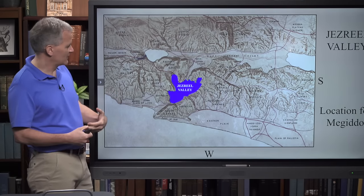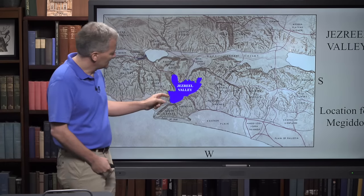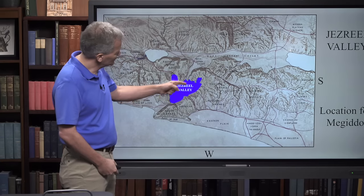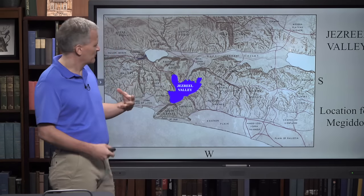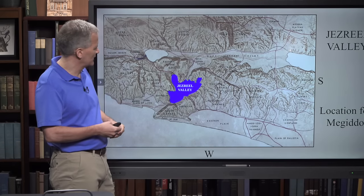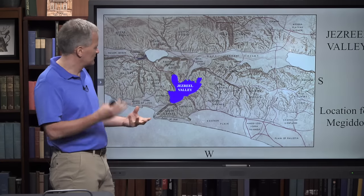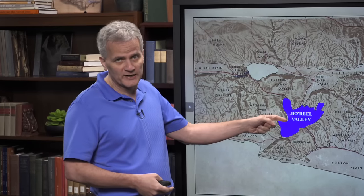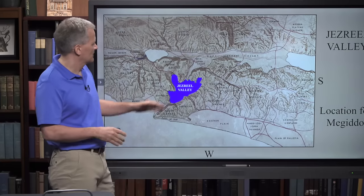We want to look at the site of Megiddo, which sits underneath this area outlined in a purplish-blue color — the Jezreel Valley. Various Old Testament events happen in the Jezreel Valley: King Ahab and Jezebel are involved there, as is Elijah. This valley is essentially where the future Battle of Armageddon will be — not just at the city of Megiddo itself, but in this Jezreel Valley where the Bible says blood will be as high as a horse's bridle.